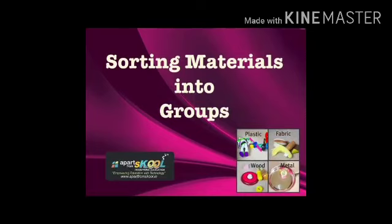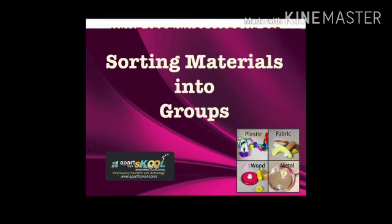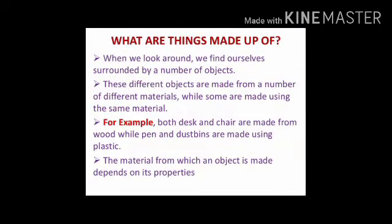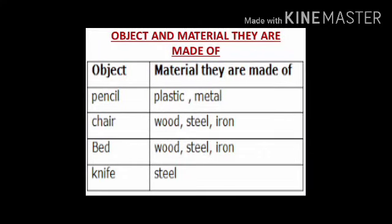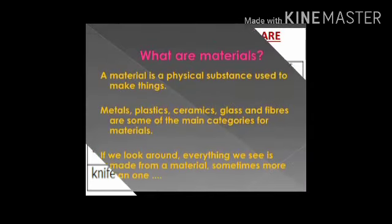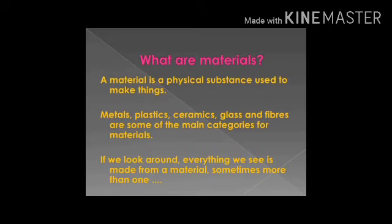हमारे चारो तरफ जब हम देखते हैं तो हमें बहुत सारे ऐसे objects दिखाई देते हैं जो की अलग-अलग material के बने होते हैं या फिर एक ही material के बने होते हैं। Material वो matter है जिससे वो objects बने होते हैं। जैसे desk और chair दोनों wood के बने हैं, pen और dustbins plastic के बने हैं। Matter में वो सभी चीज़े आती हैं जिनका mass हो और जो space occupy करती हो।